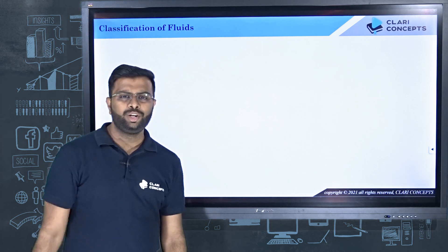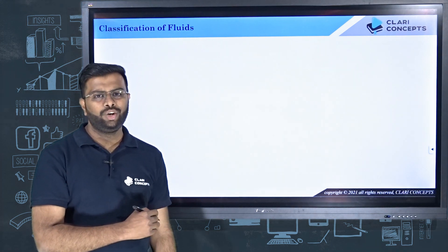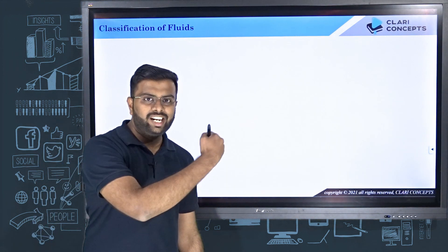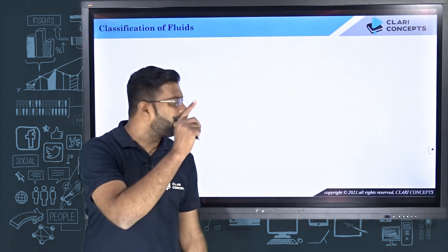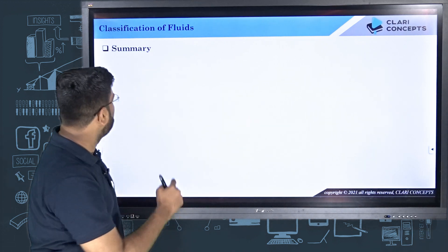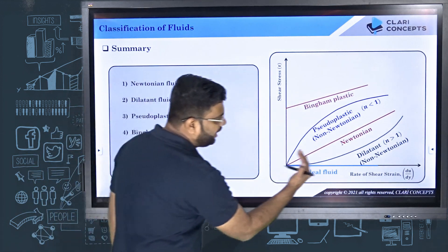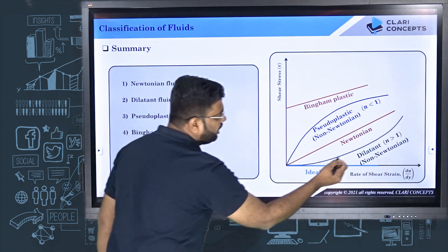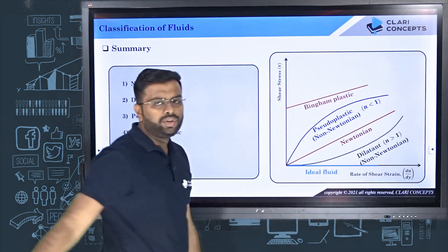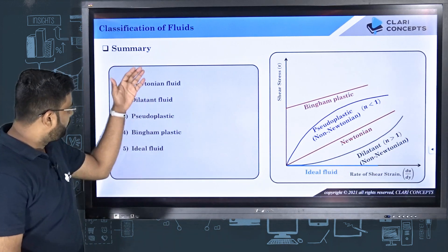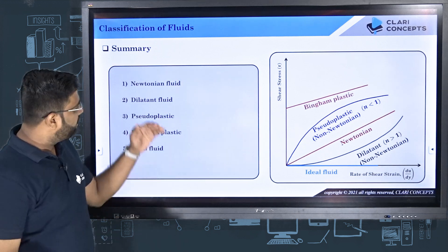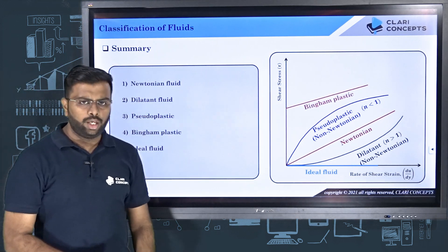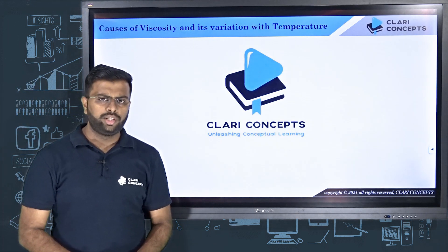So, which category of fluid is quicksand? At a higher rate of shear strain, its viscosity is higher — that means quicksand is a dilatant fluid, a shear thickening fluid. That is our summary: we have covered all five types of fluids and understood each one with their behaviors. Thank you — see you in the next class.